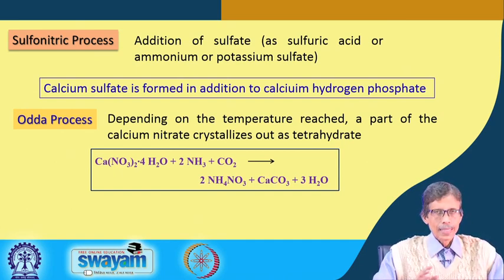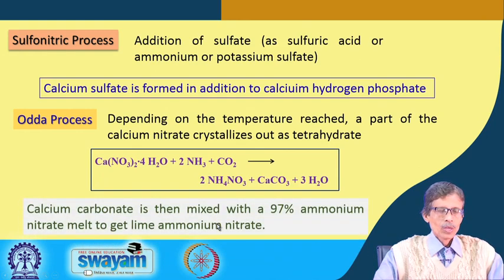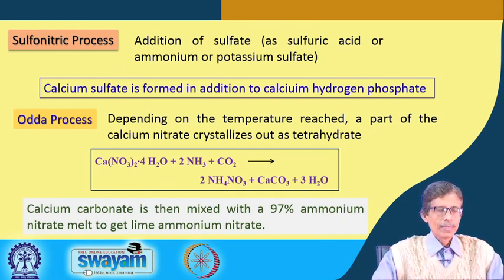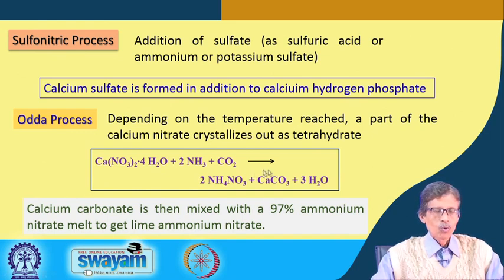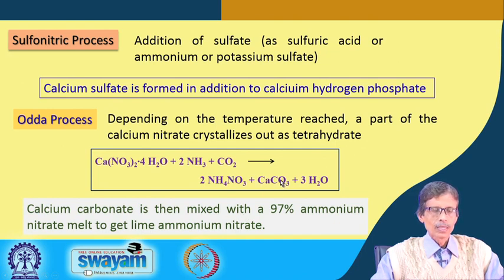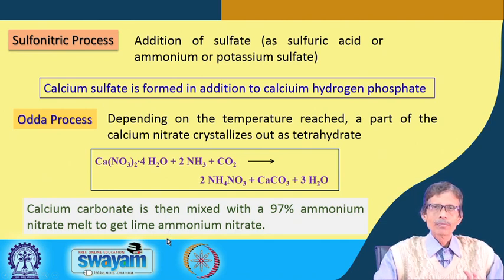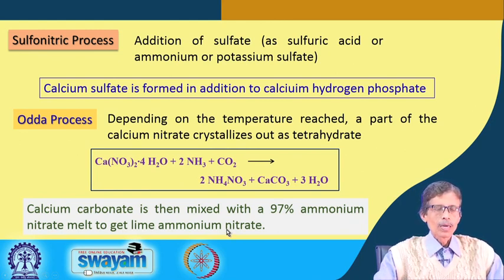Once the tetrahydrate of calcium nitrate is crystallized, it reacts with ammonia and carbon dioxide to give ammonium nitrate and calcium carbonate. The calcium carbonate formed is then mixed with a 97 percent ammonium nitrate melt. These two components melt together to give lime ammonium nitrate - a product containing ammonium nitrate with some calcium content - as the mixed fertilizer output of the ODDA process.